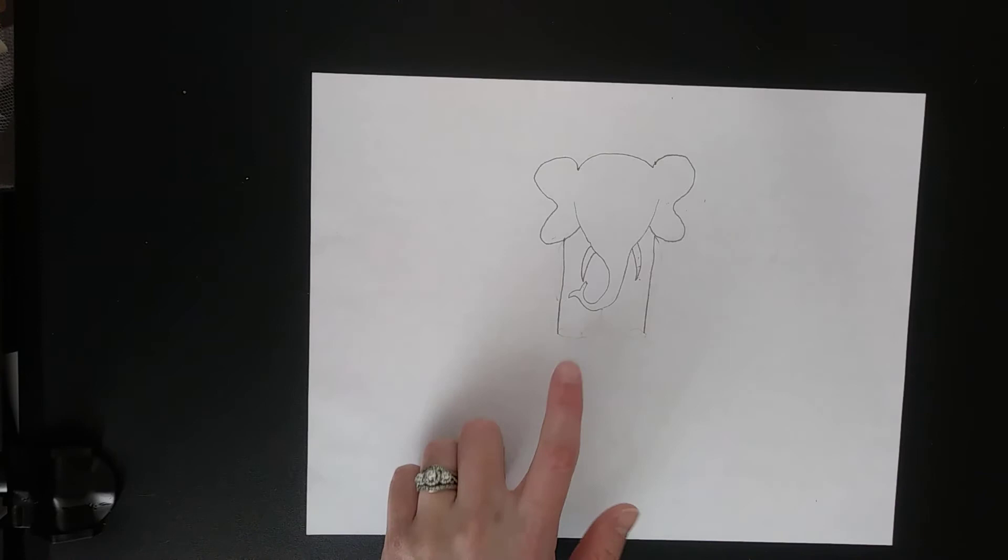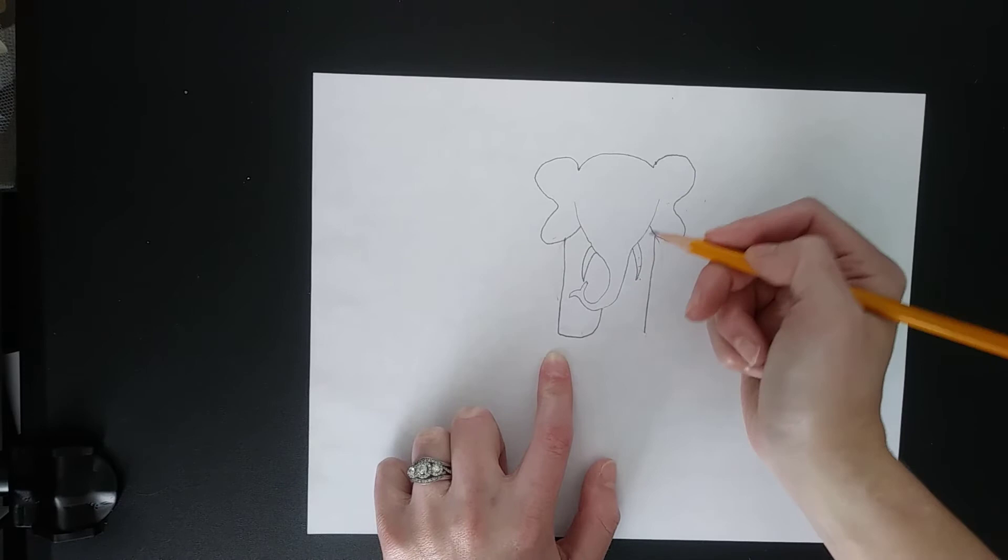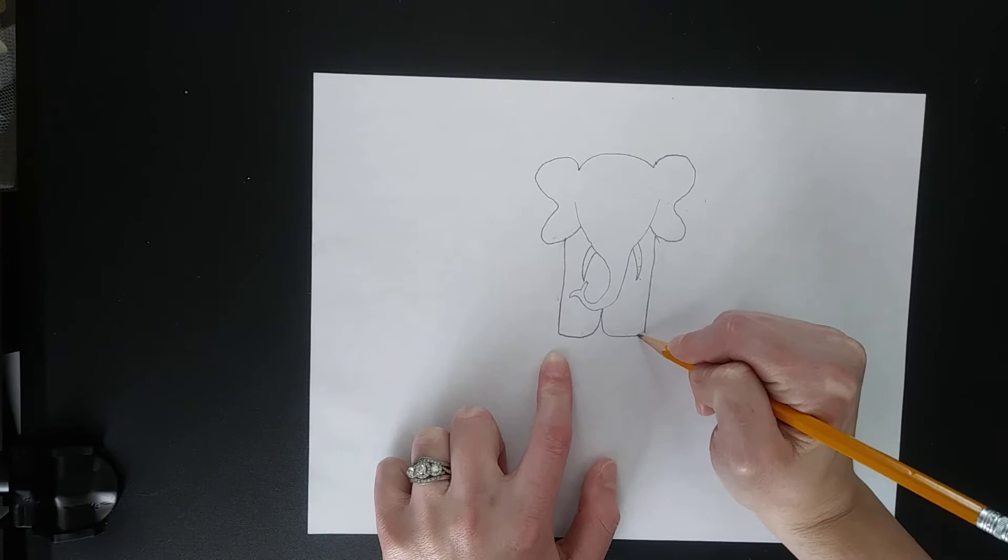Next, I'm going to add my elephant's feet. So at the bottom of my original parallel line, I'm going to curve over and up, stopping at the tusk because I'm imagining that the tusk is in front of the legs and down and connect to your line on the other side.